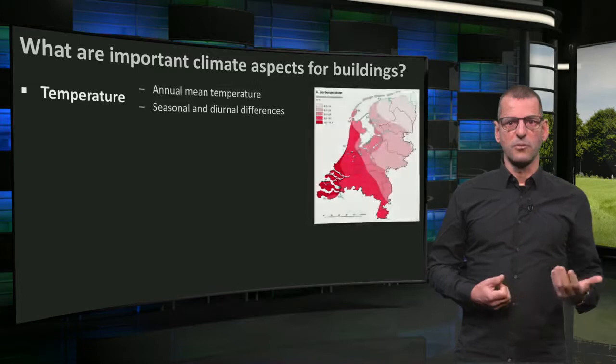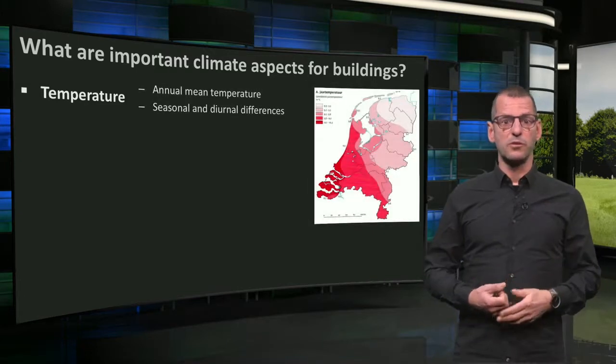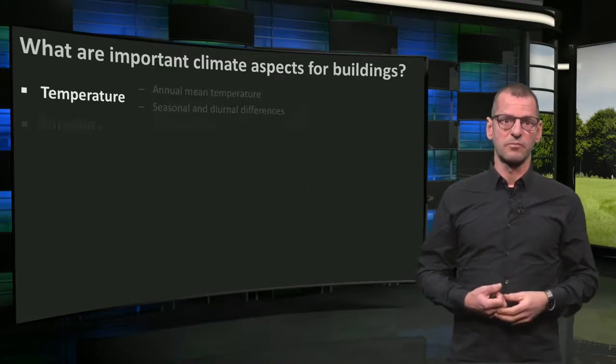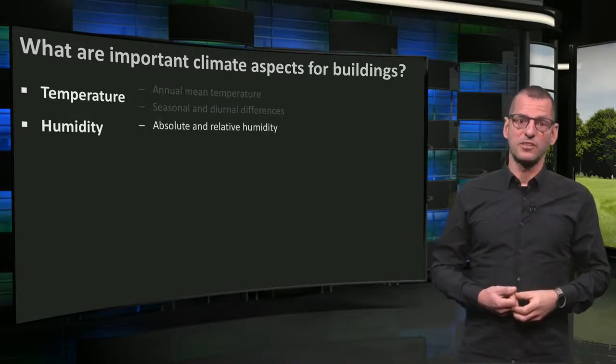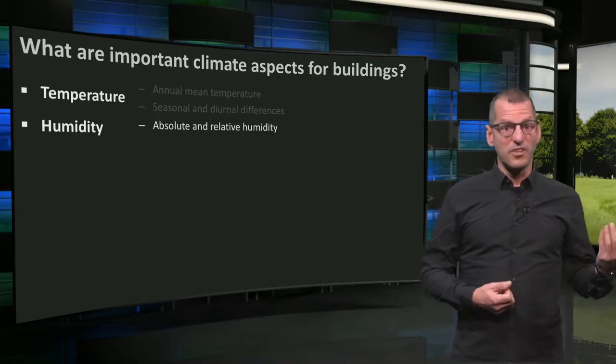Temperature: It is good to know the annual mean temperature, but also the diurnal differences. Humidity: Both the absolute and the relative humidity are important to understand what you can do with heating and cooling.